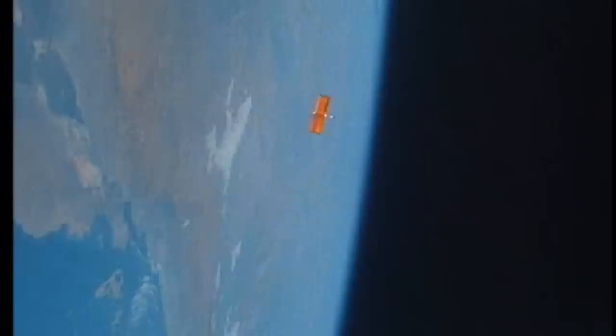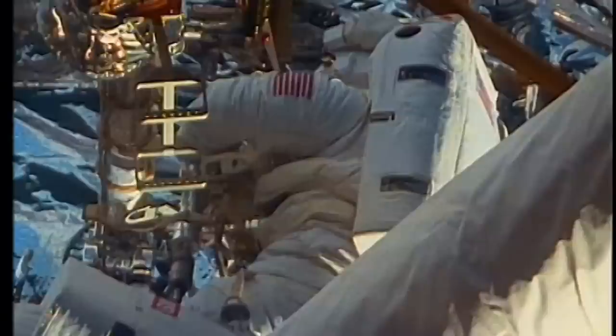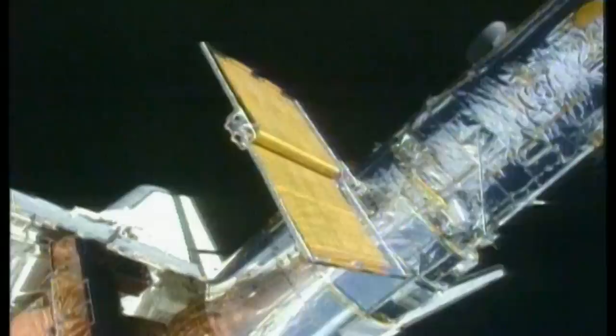Hubble a été conçu pour être entretenu dans l'espace. Mais là, il s'agit d'une véritable reconstruction. Les nouveaux panneaux ressemblent à des stores en rouleurs. Ils sont fixés au télescope, puis déployés.